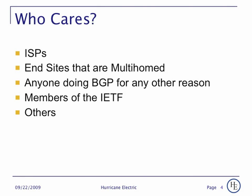Who cares? ISPs care because they need to do BGP to move routes around the internet. Sites that are multi-homed usually care because they also usually have to participate in BGP. Anybody else doing BGP for any reason, such as members of the Internet Engineering Task Force and certain others, would also care.